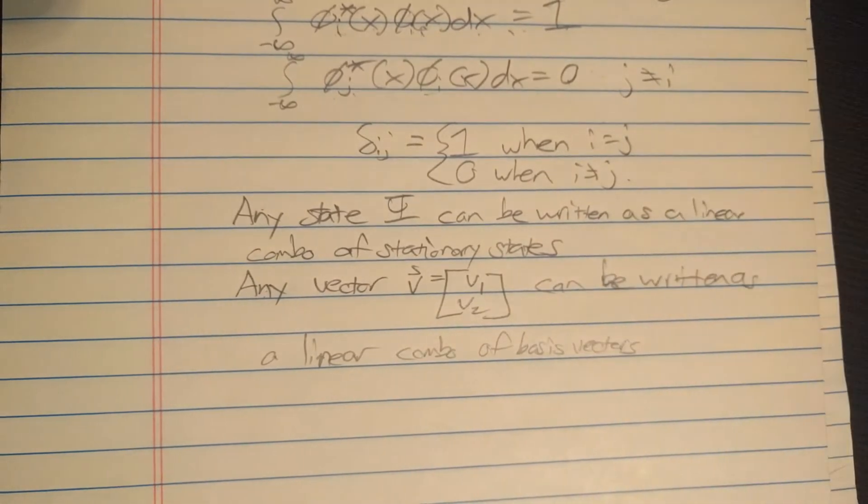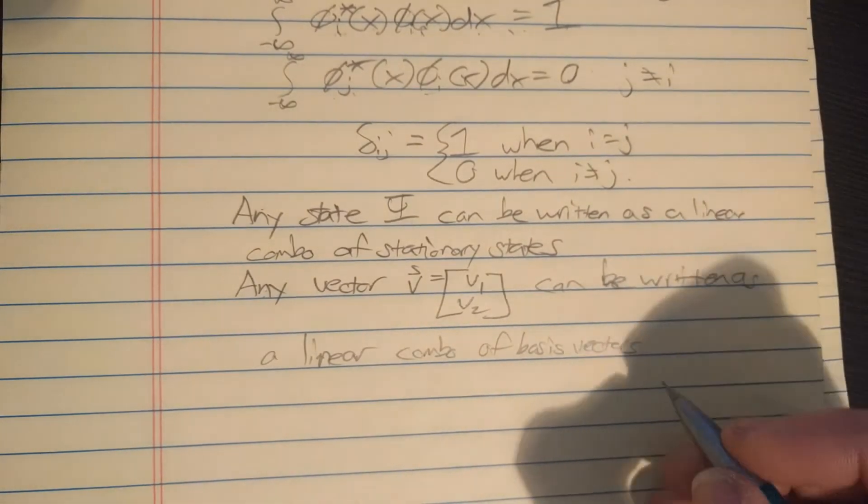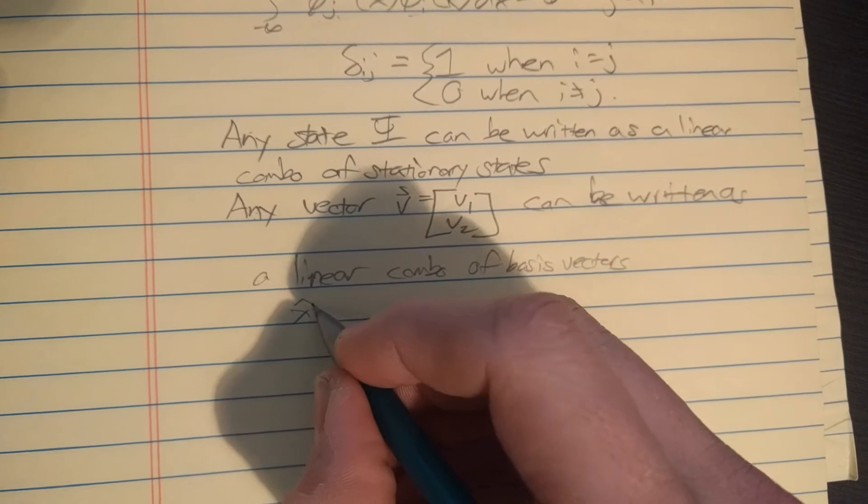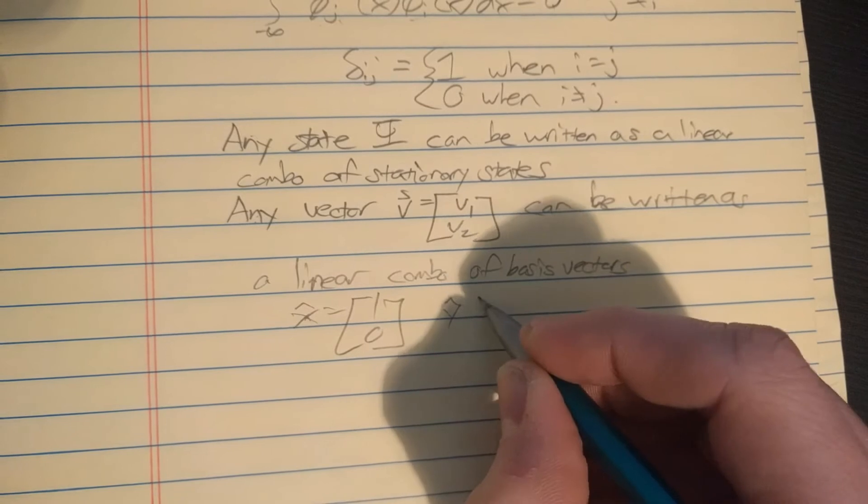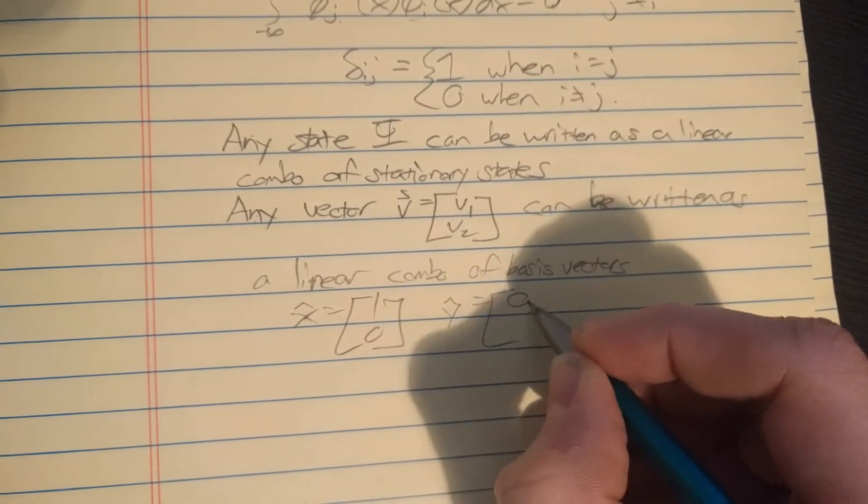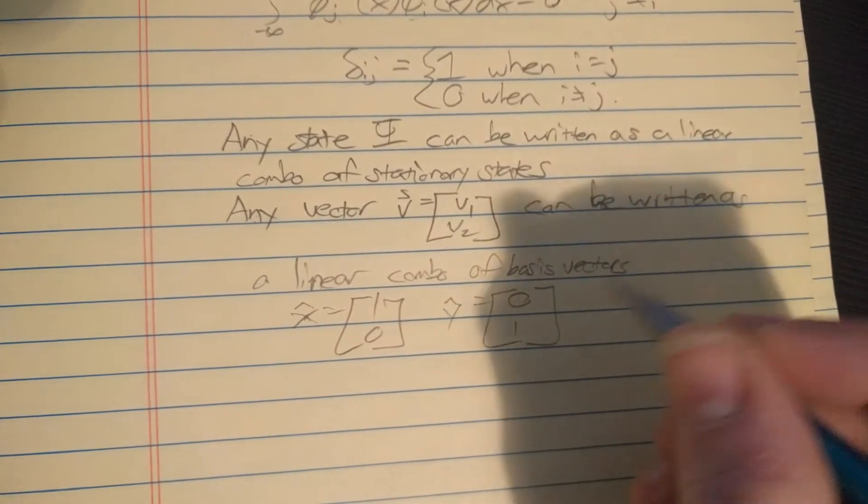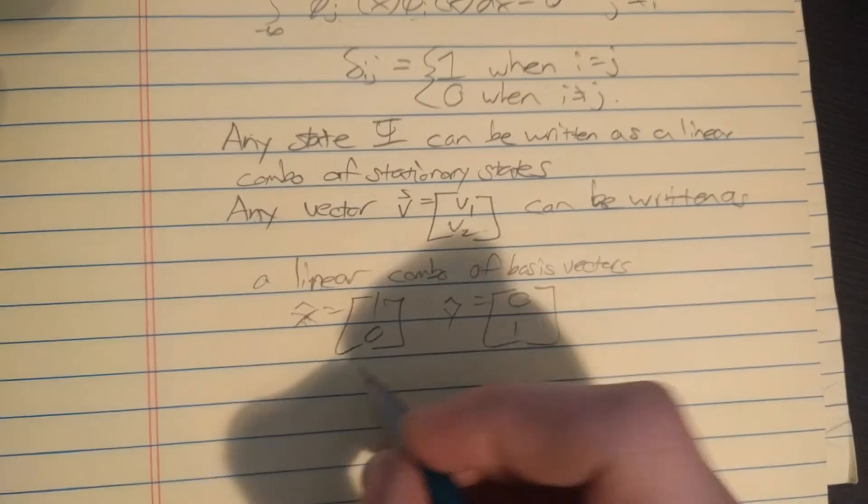Restating this in a 2D plane kind of analogy, we would say any vector v, which could have elements v1 and v2, can be written as a linear combination of basis vectors. The most common basis vector for the 2D plane is x hat equal to one zero.